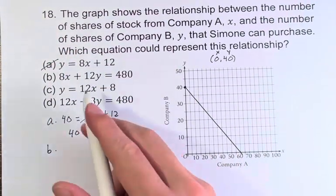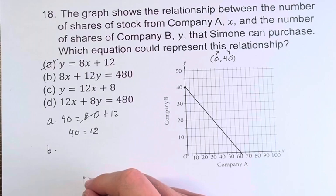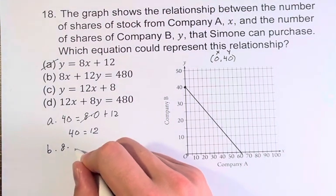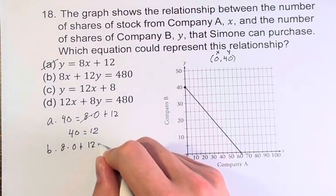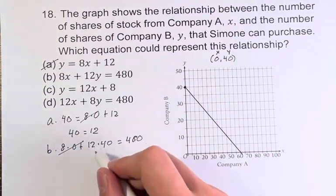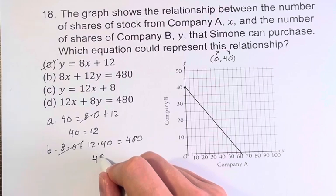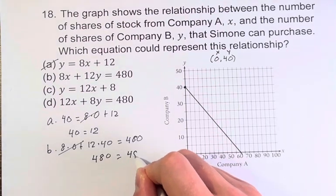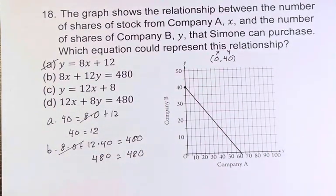For B, 8x plus 12y is equal to 480. This gives us 8 times 0 plus 12 times 40 is equal to 480. Again the 0 term just cancels. 12 times 40 is 480 which is equal to 480. So far B is good.